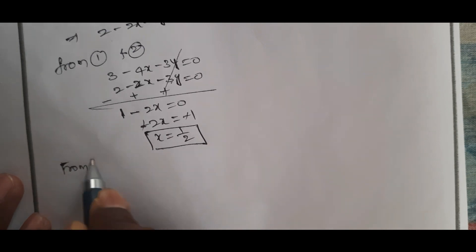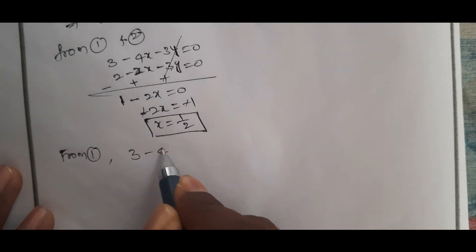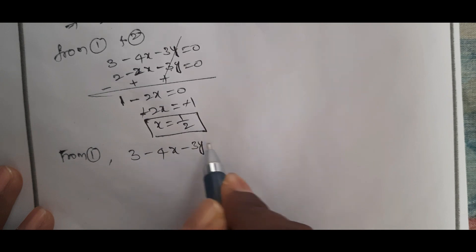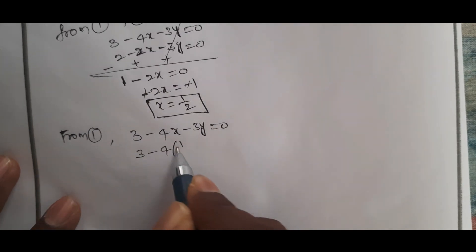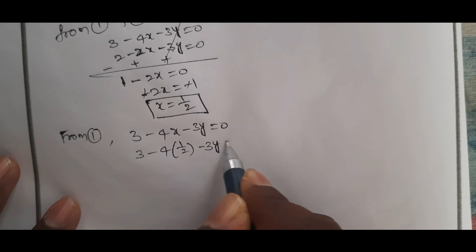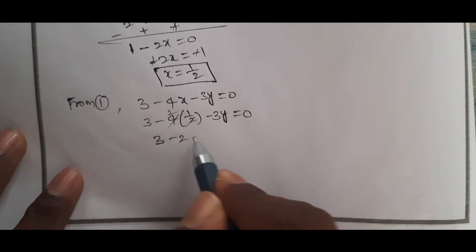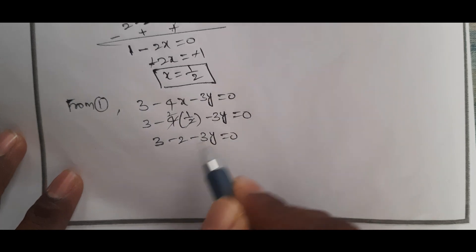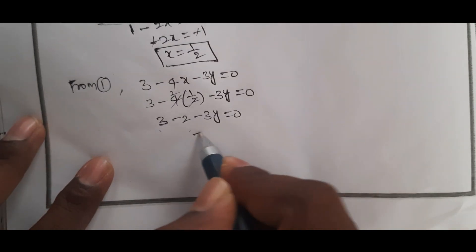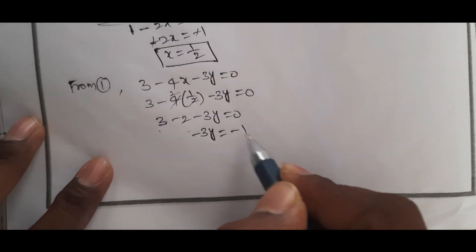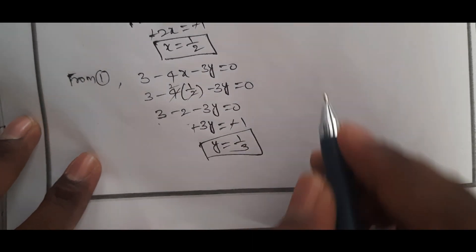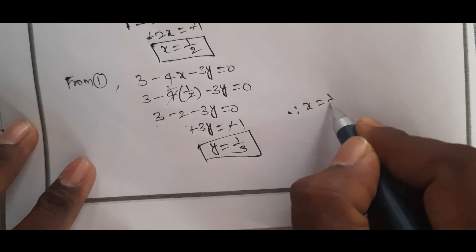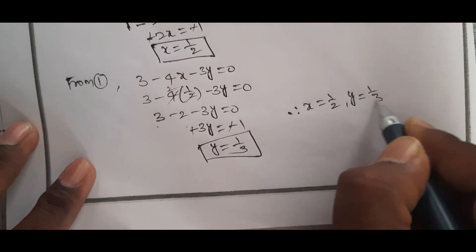From equation 1, substituting x = 1/2: 3 - 4(1/2) - 3y = 0, which gives 3 - 2 - 3y = 0, so 1 - 3y = 0, therefore y = 1/3. So the critical point is x = 1/2, y = 1/3.